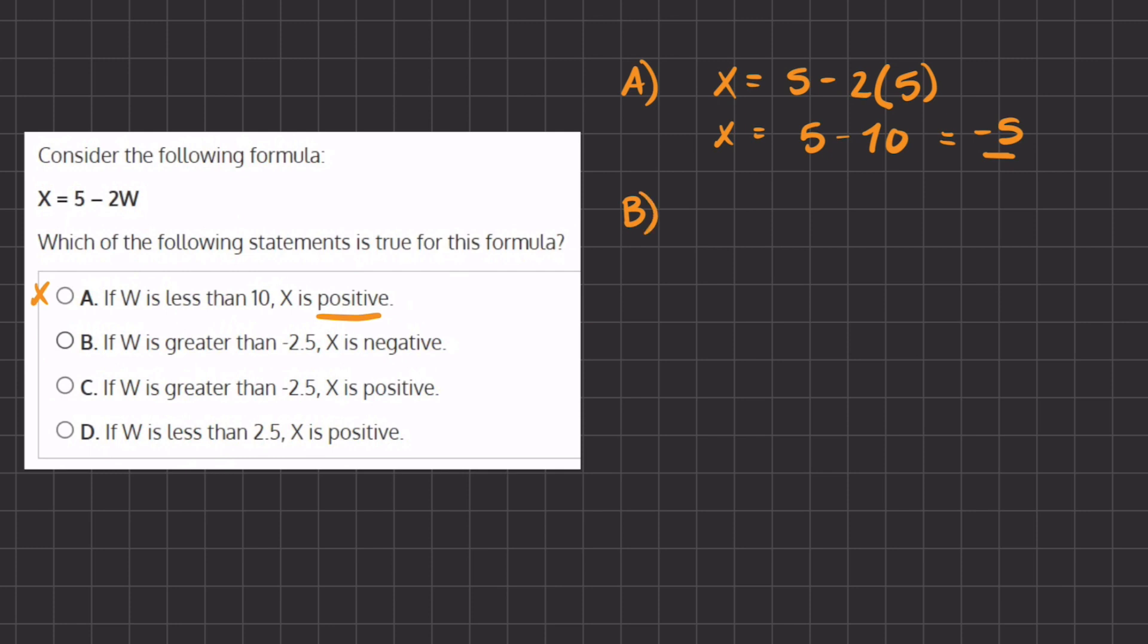Let's move on to B. If W is greater than negative 2.5, X is negative. Alright, let's check this. X equals 5 minus 2 times a number that is greater than negative 2.5, which could be 0. And we will get X equals 5, which is incorrect because we got a positive number. So B is incorrect.